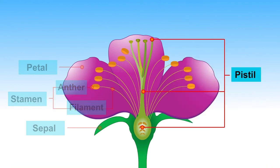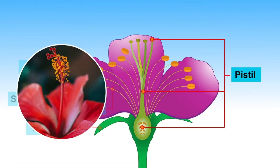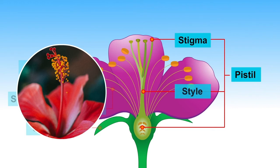Pistil is the innermost part of the flower. It is the female reproductive part of a flower. It consists of three parts: stigma, style, and ovary.